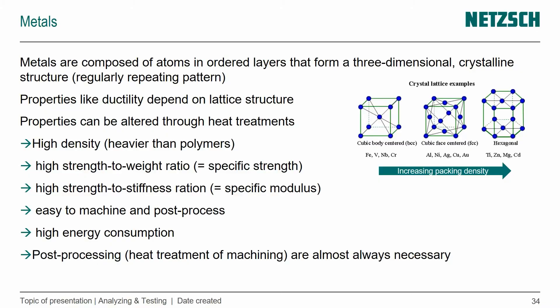So far I've talked a lot about polymers. The difference really between polymers and metals is the molecular structure. For polymers, we know about long molecular chains and giant molecules. For metals, we have lattice structures that are composed of atoms — ordered layers forming a three-dimensional crystalline structure with a very regularly repeating pattern.